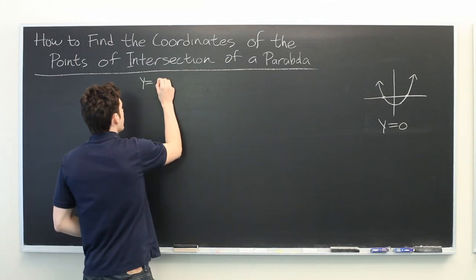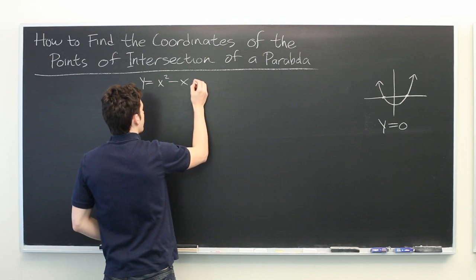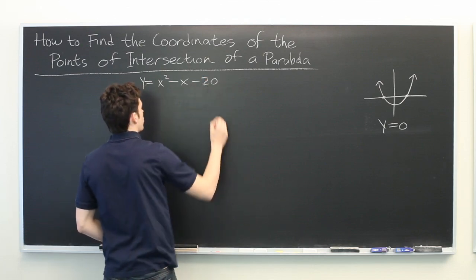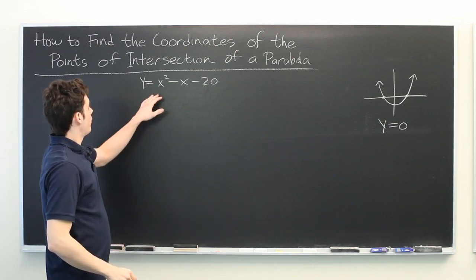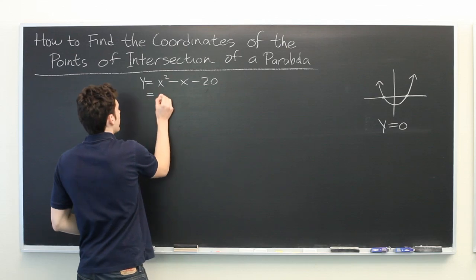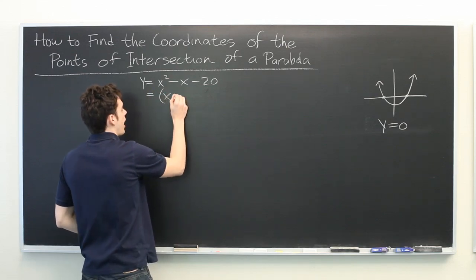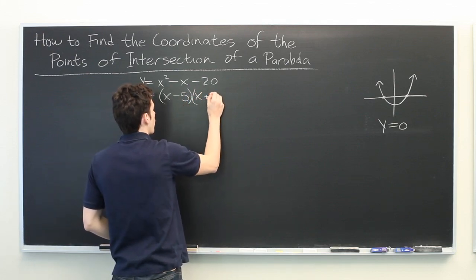Let's say we have y equals x squared minus x minus 20. Well in this case it's helpful to note that this can be factored. We can rewrite this as x minus 5 times x plus 4.